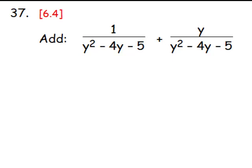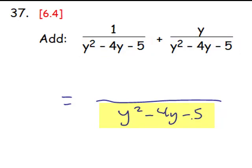Number 37. Here we have to add two fractions. And whenever we add or subtract fractions, we must have the same denominator, common denominators. Fortunately, that's exactly what we have here in these two fractions. So when we add them together, the denominator, y squared minus 4y minus 5, is the same that we have in the two fractions we started with. The numerators now just add together 1 plus y.